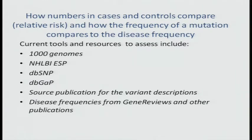One needs to think hard about how the numbers of cases and controls compare — getting at the relative risk in how the frequency of variants compares in cases and controls. As control databases grow, it is going to be essential that we are able to get at phenotypic information of individuals we're using as controls. That is probably a central priority for the field: establishing large genome databases with individuals that are either phenotyped or available for phenotyping.